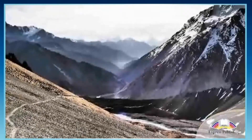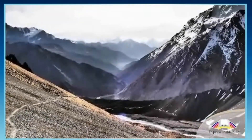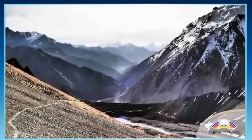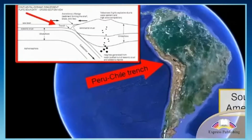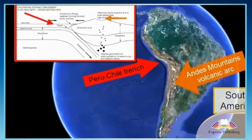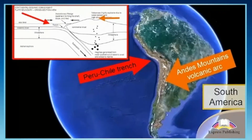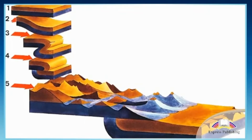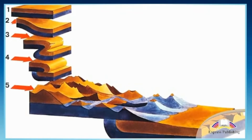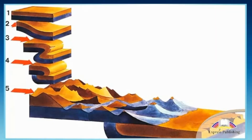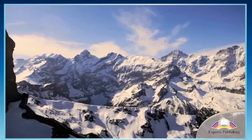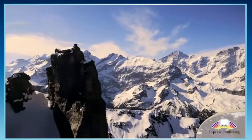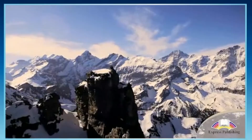Formed over millions of years, the most common type of mountain is the fold mountain. Fold mountains form where two tectonic plates collide. The plates push against each other and the edges fold upwards. These folds can form whole mountain ranges such as the Alps and the Himalayas.